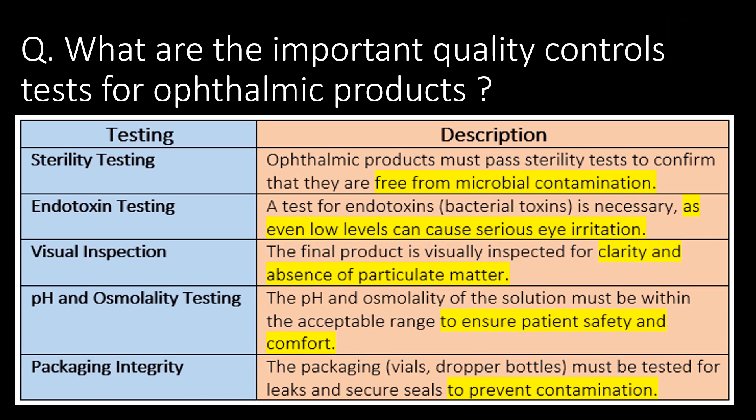What are the important quality control tests for ophthalmic products? First, sterility testing, done to ensure ophthalmic products are free from microbial contamination. Second, endotoxin testing. Third, visual inspection, done to ensure the filled product is clear and free from particulate matter. Fourth, pH and osmolarity testing. Fifth, packaging integrity testing.